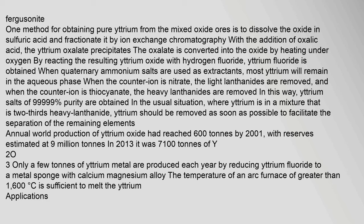One method for obtaining pure yttrium from mixed oxide ores is to dissolve the oxide in sulfuric acid and fractionate it by ion exchange chromatography. With the addition of oxalic acid, the yttrium oxalate precipitates. The oxalate is converted into the oxide by heating under oxygen. By reacting the resulting yttrium oxide with hydrogen fluoride, yttrium fluoride is obtained. When quaternary ammonium salts are used as extractants, when the counter-ion is nitrate the light lanthanides are removed, and when the counter-ion is thiocyanate the heavy lanthanides are removed, yielding yttrium salts of 99.999% purity.